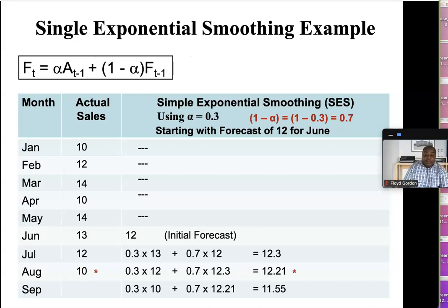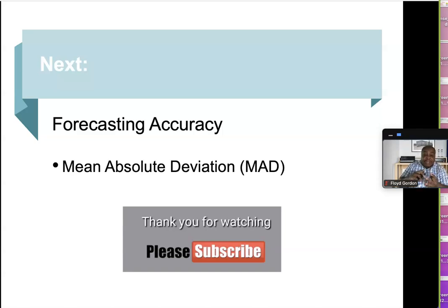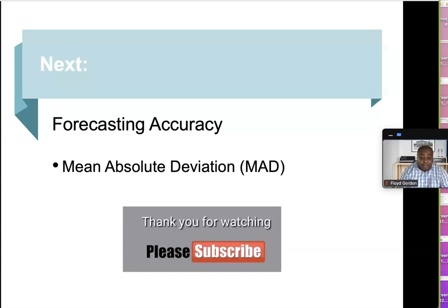These would be our forecasts for June to September using alpha equals 0.3. So thank you — we have gone through three forecasting techniques: simple moving average, weighted moving average, and now simple exponential smoothing. Next we'll be looking at forecast accuracy, starting with the mean absolute deviation (MAD). Thank you for watching, please like and subscribe for more videos.